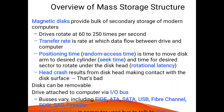The overview of mass storage structure: magnetic disks provide the bulk of secondary storage for modern computers. Drives rotate at 60 to 250 times per second. The transfer rate is the rate at which data flows between the drive and computer. Positioning time is the time to move the disk arm to the desired cylinder and the time for the desired sector to rotate under the disk head. The head crash results from the disk head making contact with the disk surface. Disks can be removable and are attached to the computer via I/O buses including EIDE, ATA, SCSI, USB, fiber channel, and SAS fiber.